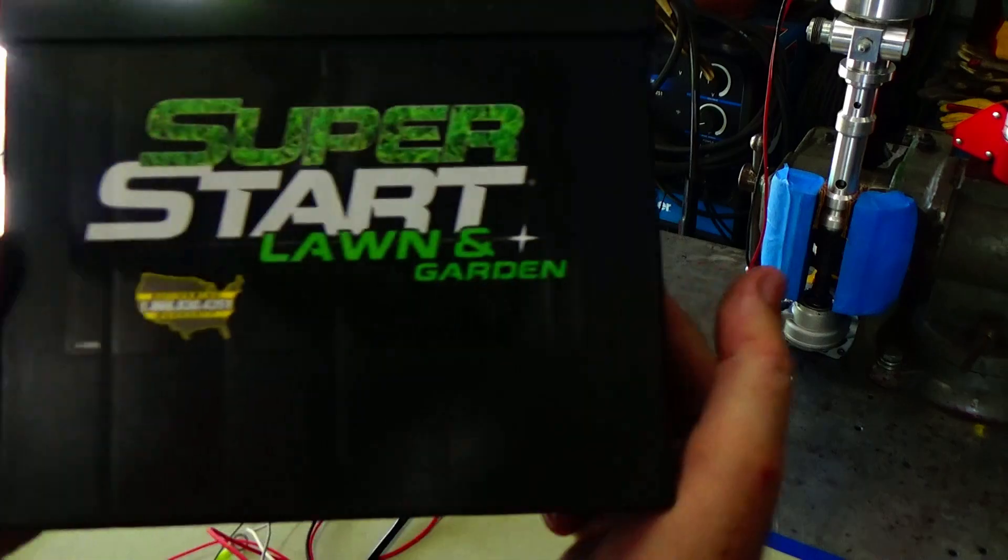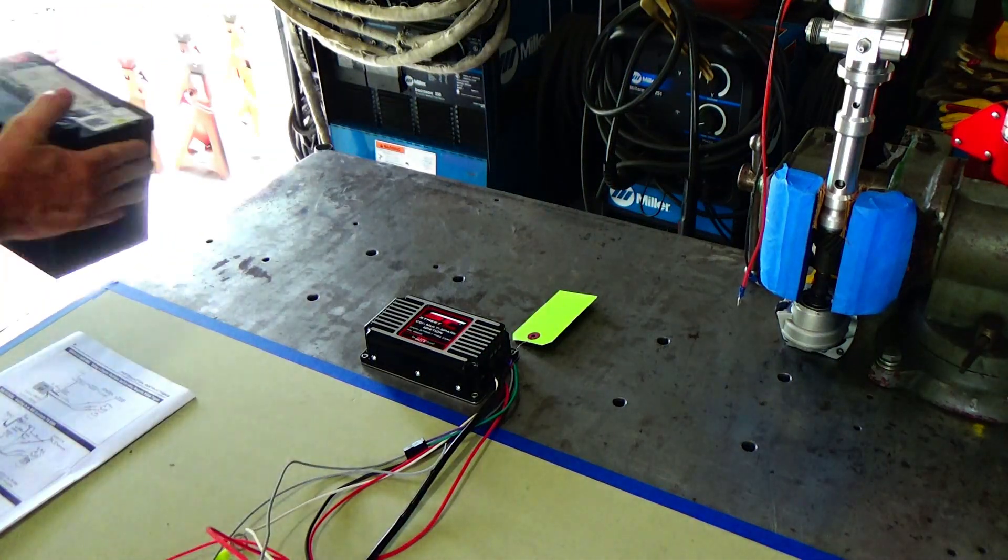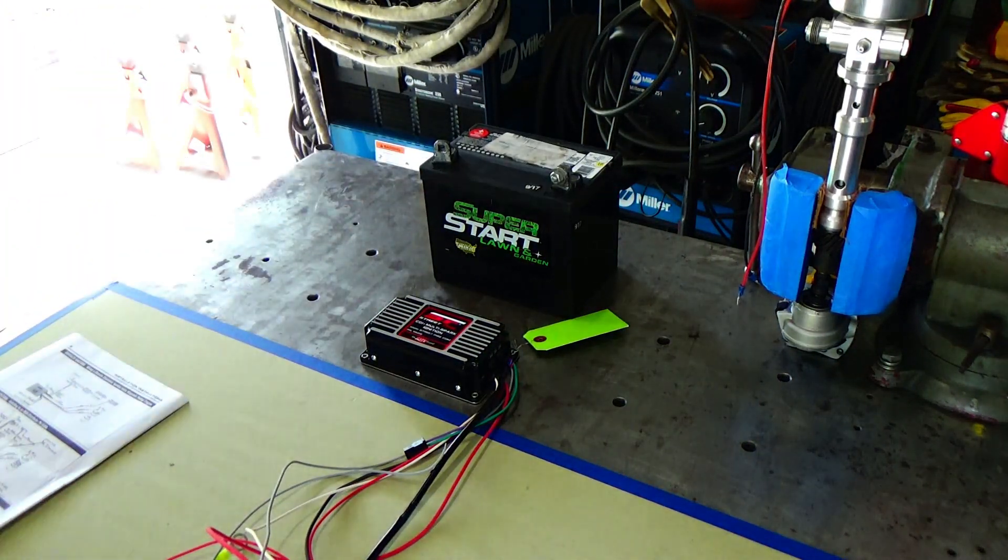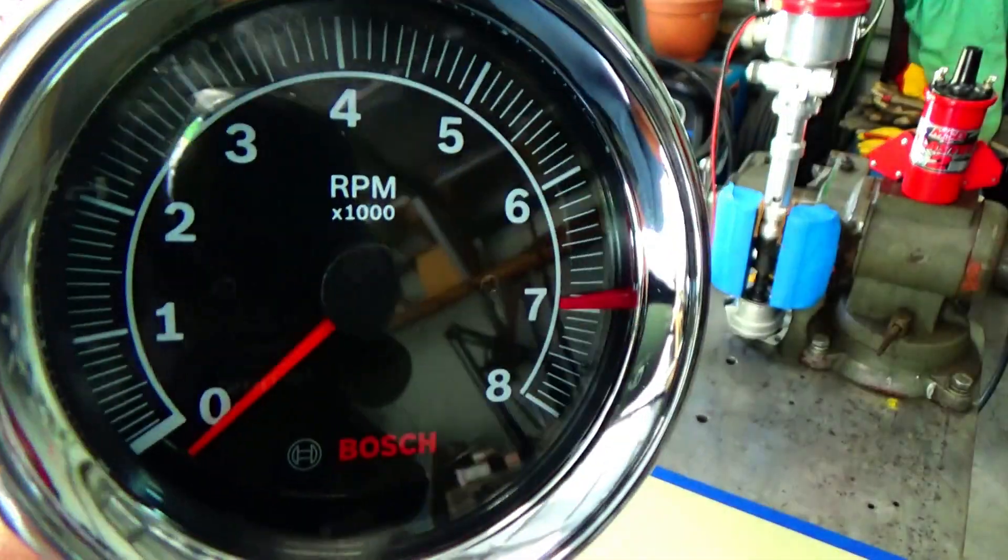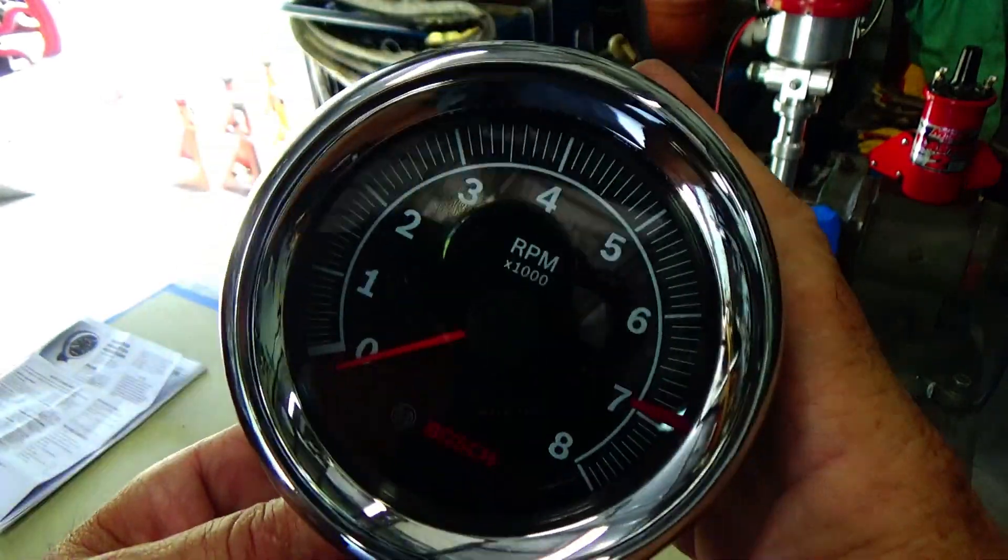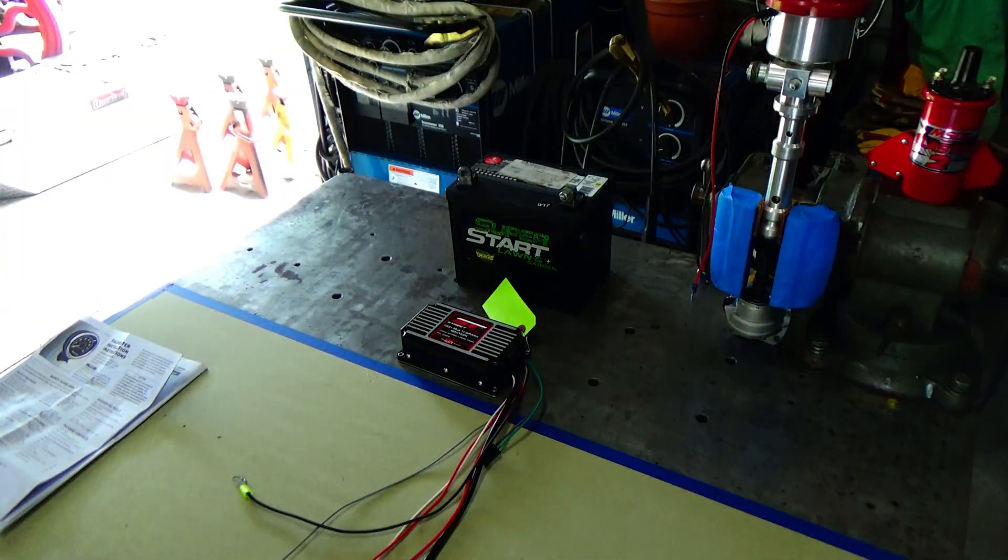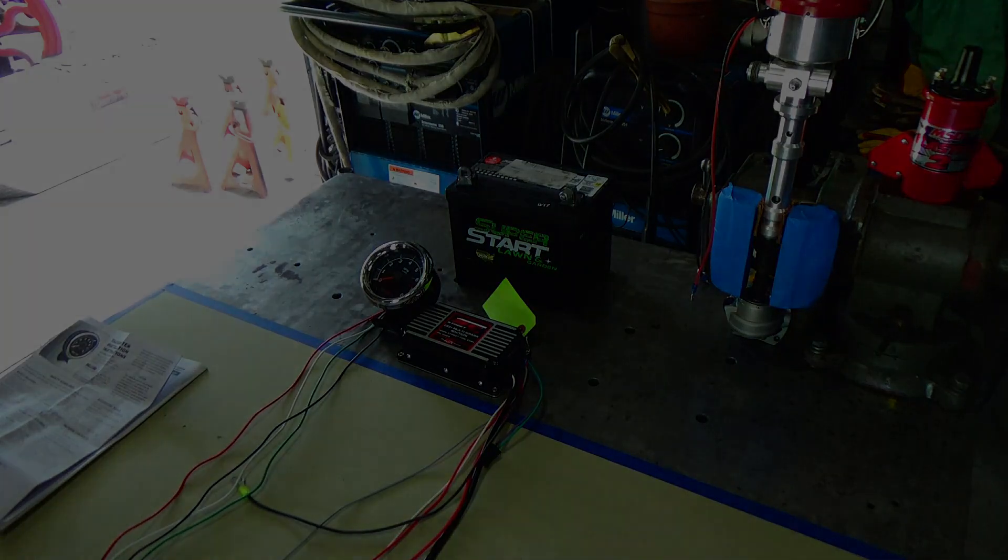I'm just going to use an old lawnmower battery, a 12 volt lawnmower battery to give it the power. And there's a tach that I'm going to use. It's a new Bosch tach. But that way we'll be able to keep up the RPMs that we're running and testing the things at.